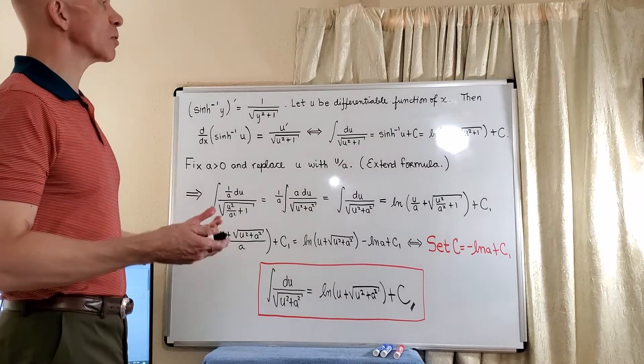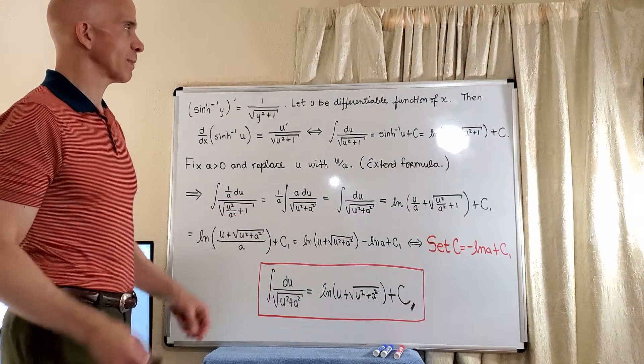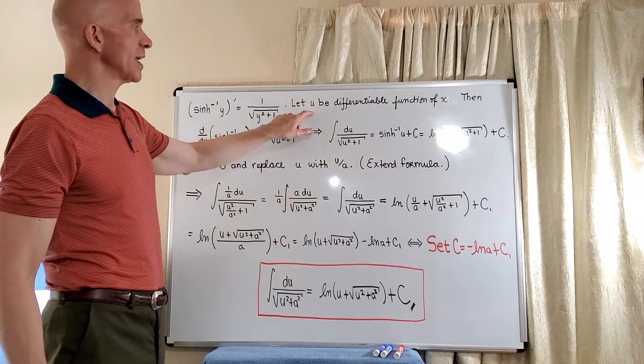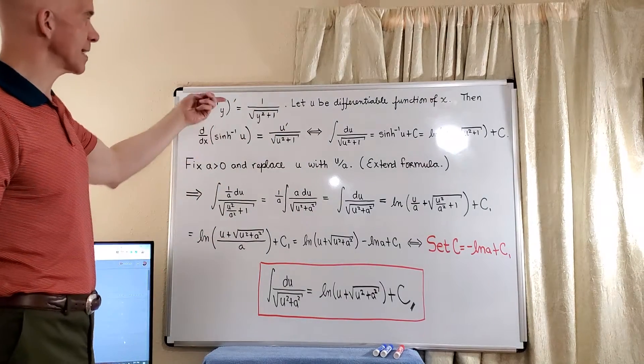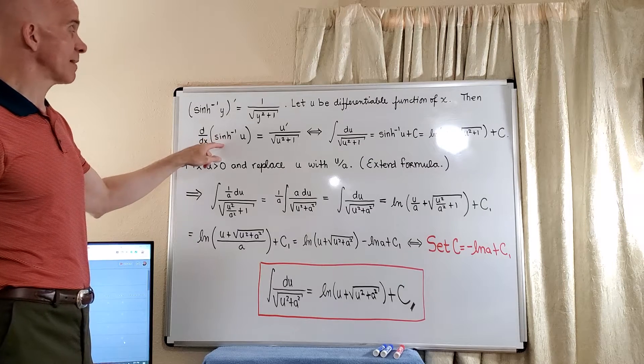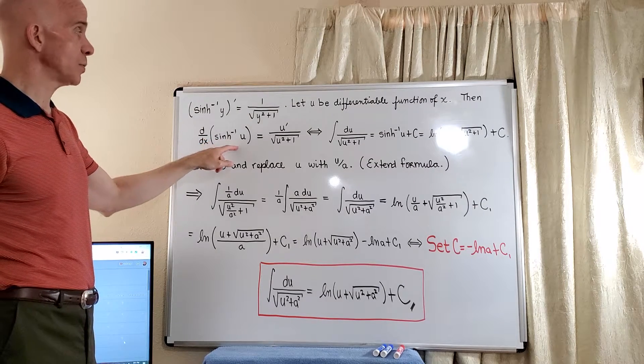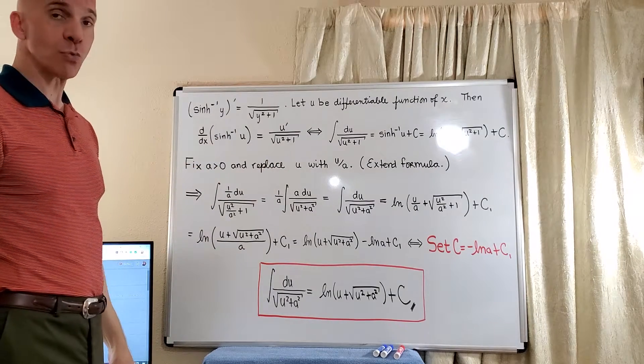Now we can be a little bit more flexible and change variables that will fit whatever type of problem we're doing. So let's suppose that we have u to be a differentiable function of x. Now we can extend this formula by the chain rule. So we'd have the derivative of the inverse hyperbolic sine of u will now be u prime divided by the square root of u squared plus 1.